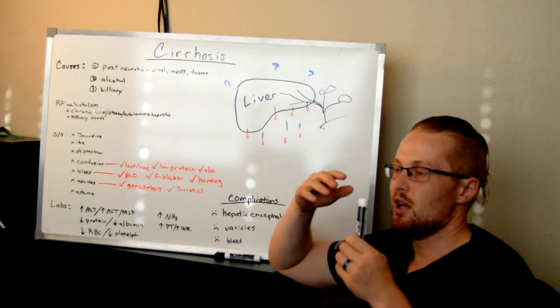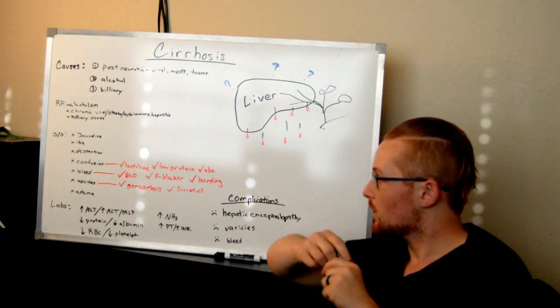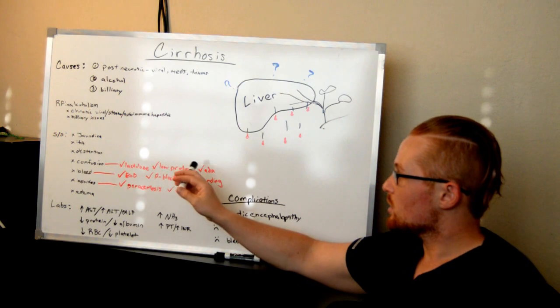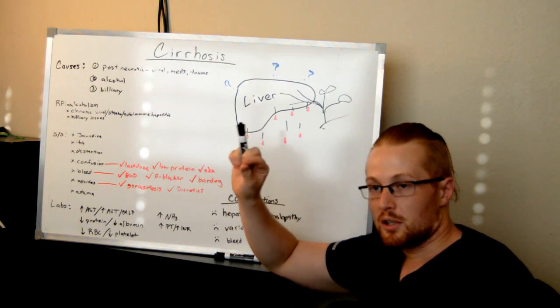Lactulose is a liquid they drink and it makes them poop out the ammonia.